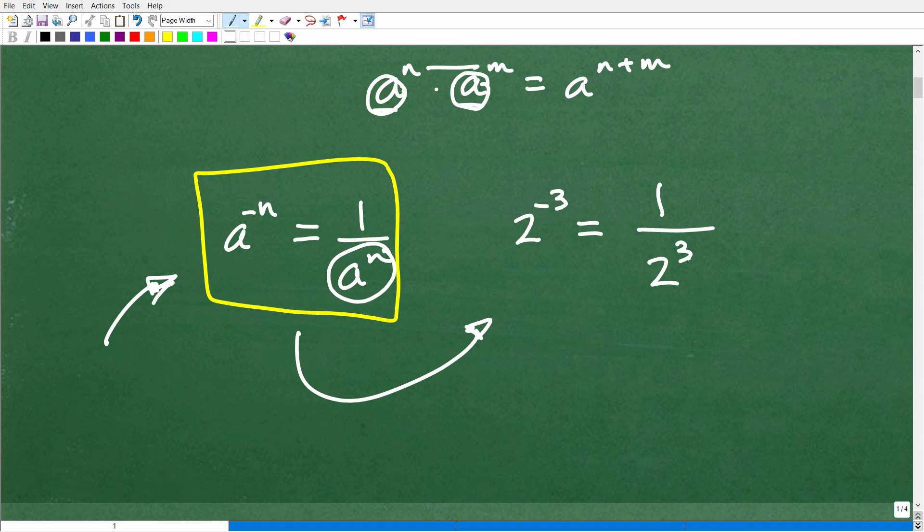Now what's interesting is if I was to give you this, 1 over 2 cubed, could you interpret this rule backwards? Most of us are looking at this rule going this way. Let me just kind of erase this. You're thinking about going from here to here, okay?